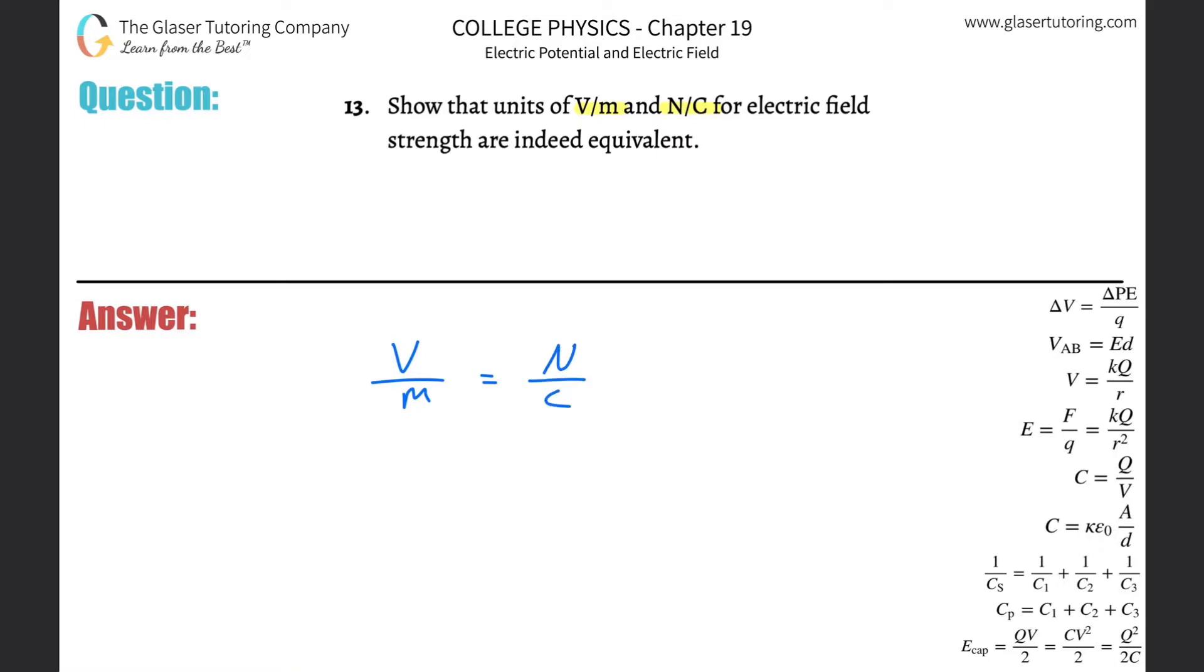So first thing I want to do is highlight the volt here. Notice that volt in the formula here on the right, that volt is essentially equal to the energy, potential energy divided by the charge. We know that energy has the units of joule and charge has the units of Coulomb. So what I'm going to do here is basically take this set of units and substitute it in for volt.